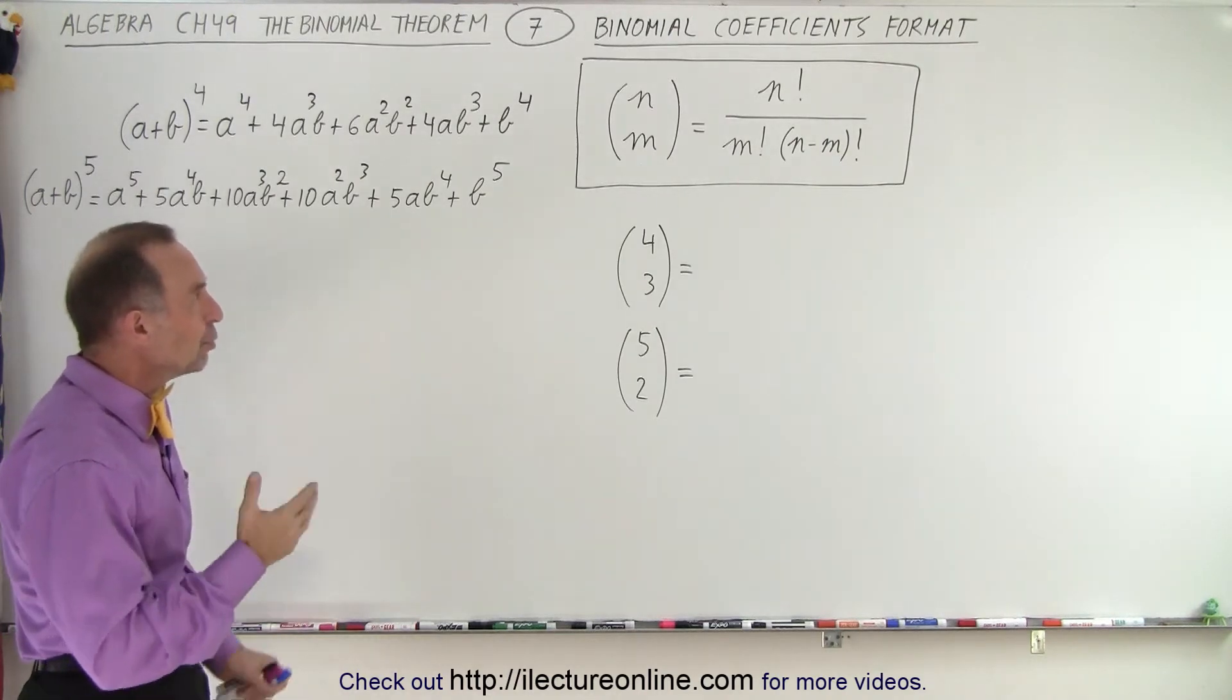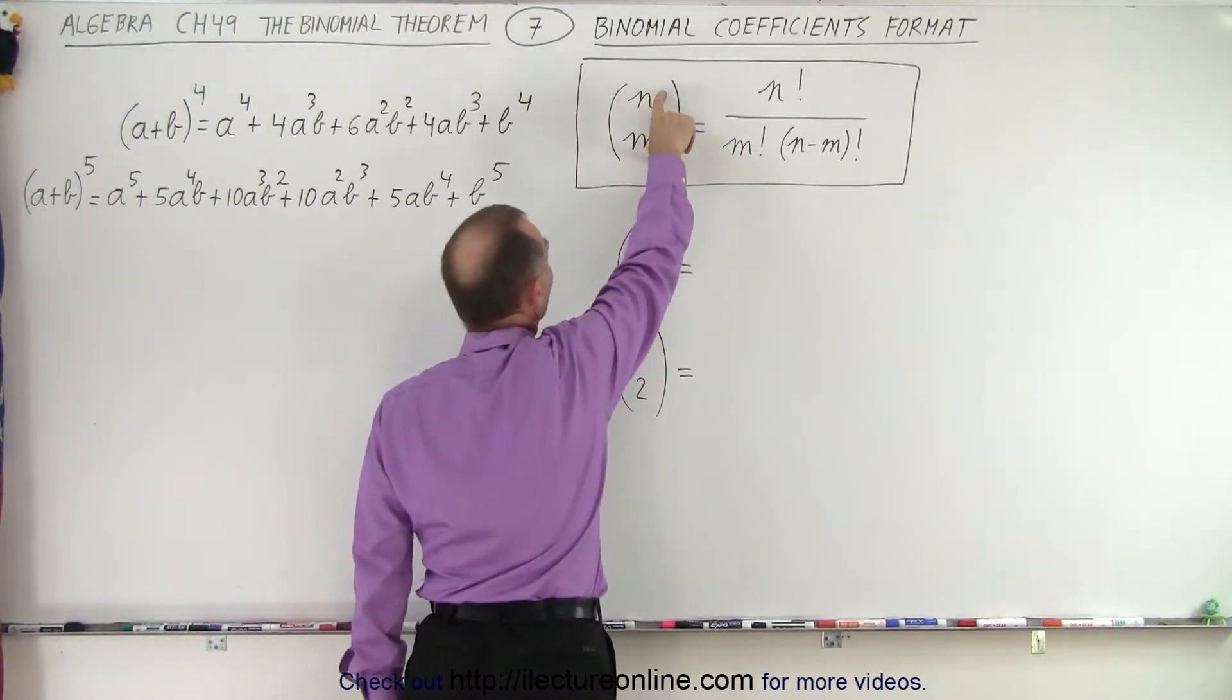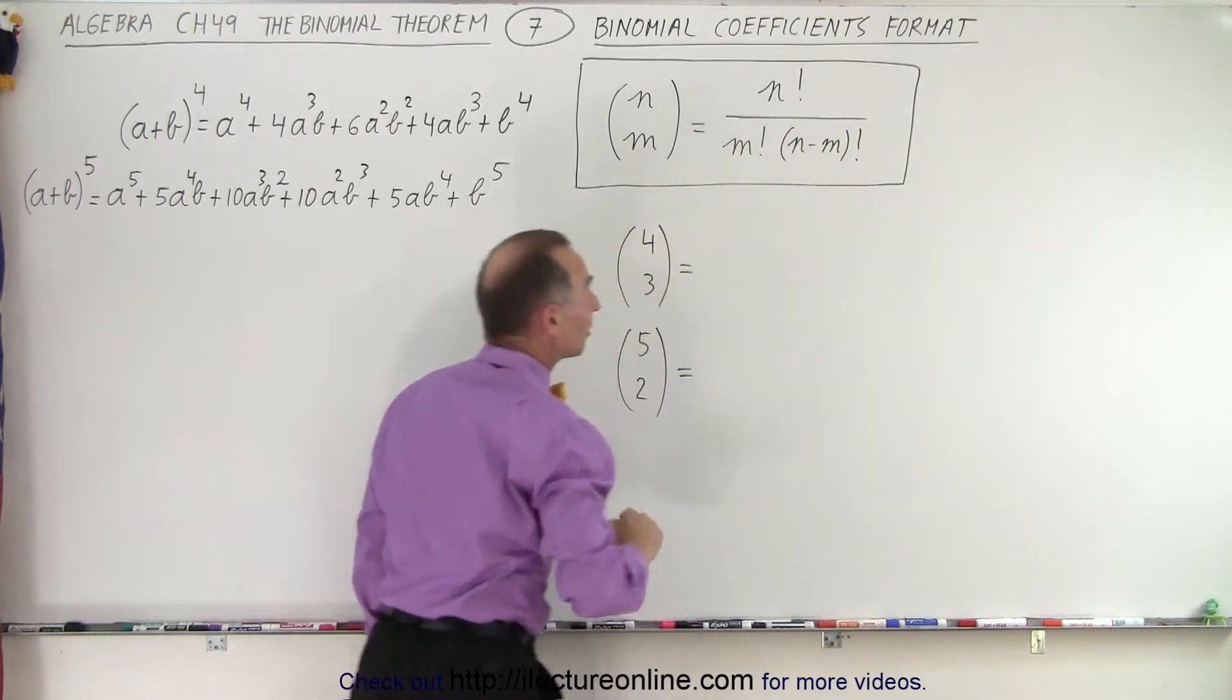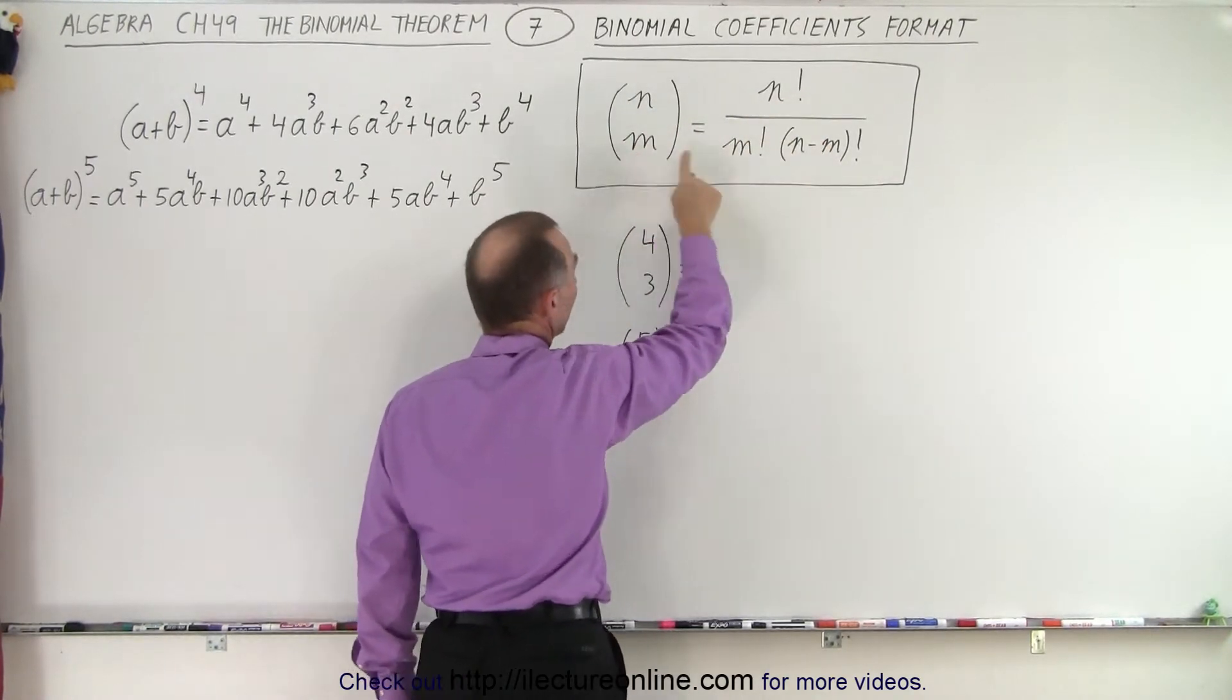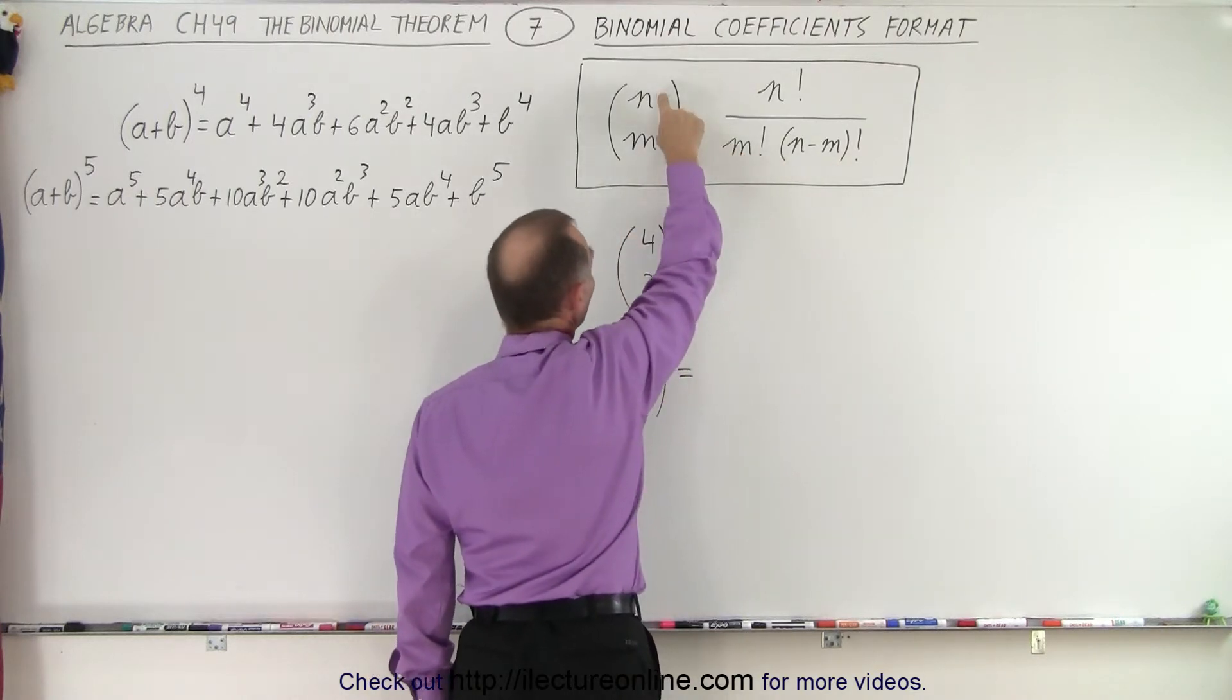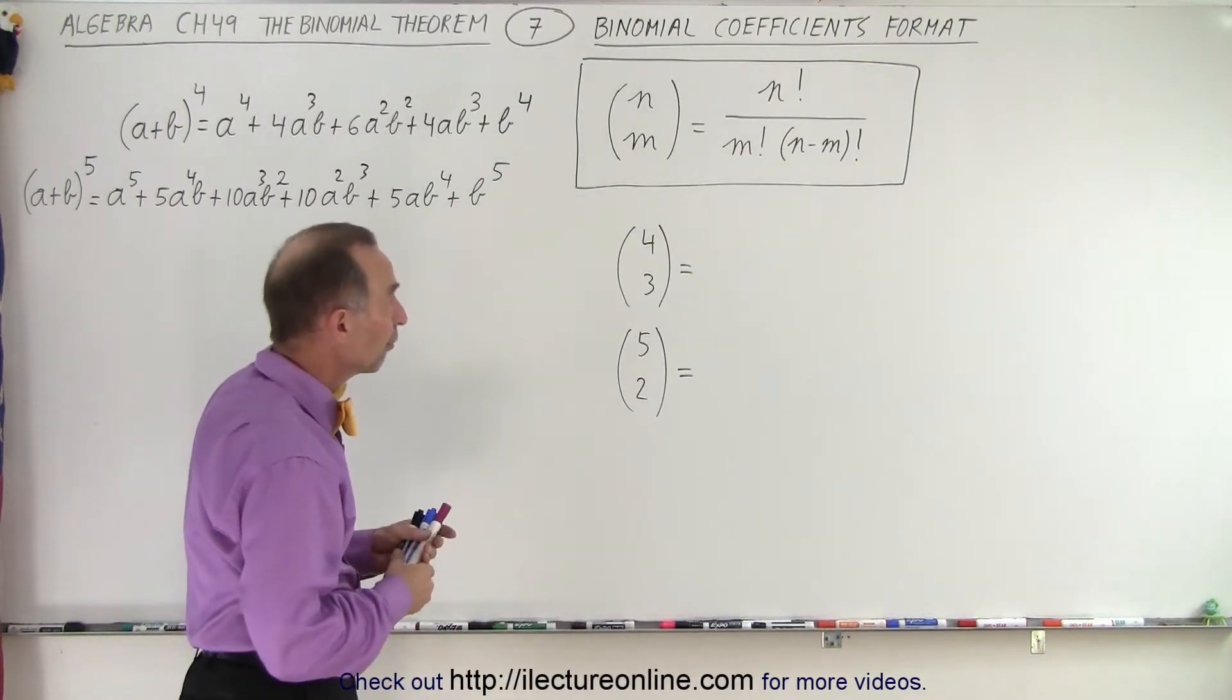Here we have a new definition: the binomial coefficient format. When you have two parentheses with two numbers inside like this, it means the expression on the right side of the equation. We take the top number and make it n factorial. The bottom number becomes m factorial. In the denominator, we take the difference of the two numbers and make that a factorial as well. That's the general formula for binomial coefficients.